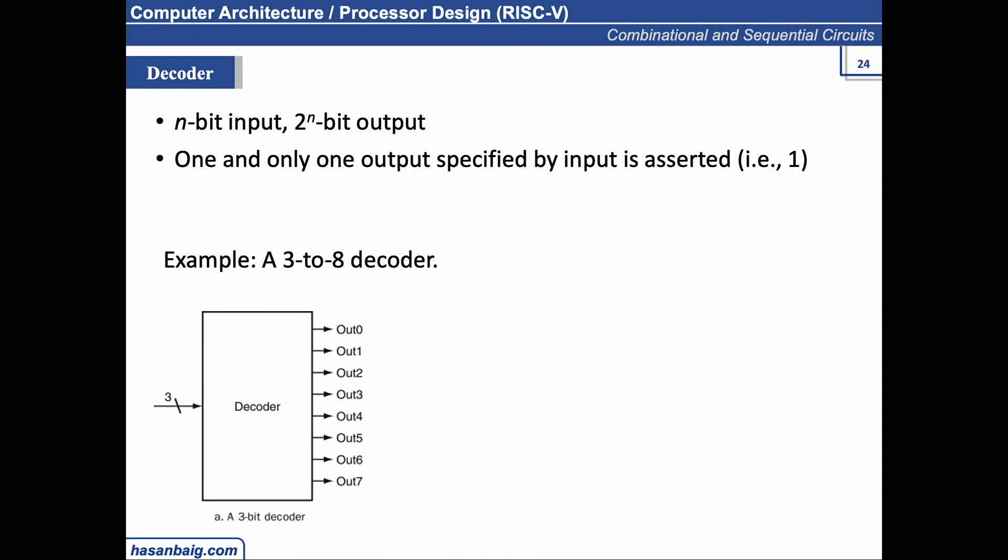So if you understand this, this clearly says that it is a 3-bit signal. So because of it, 3 is n equals 3. So we have 2 to the power 3 output lines in decoder. Out 0, out 1, out 2, and 1 of them will be set to 1 only for any n input combination.